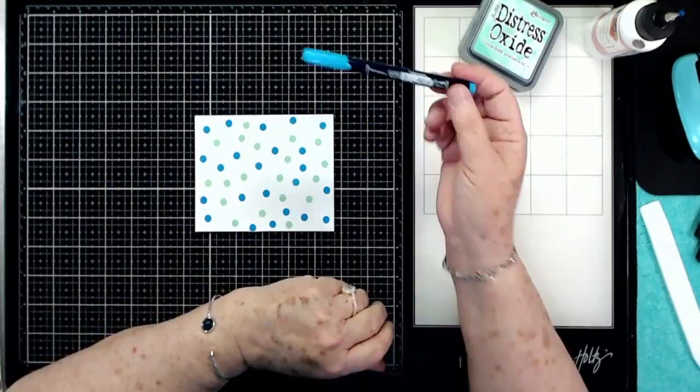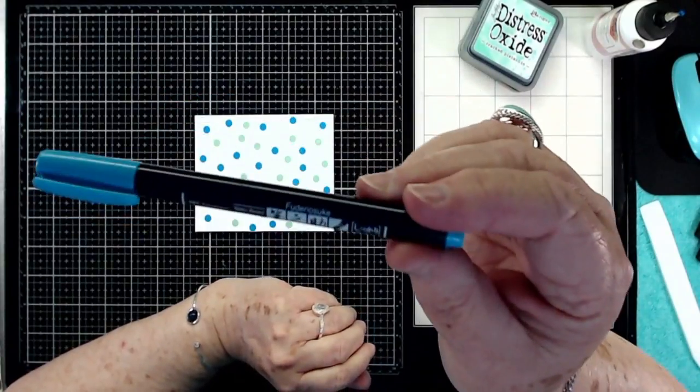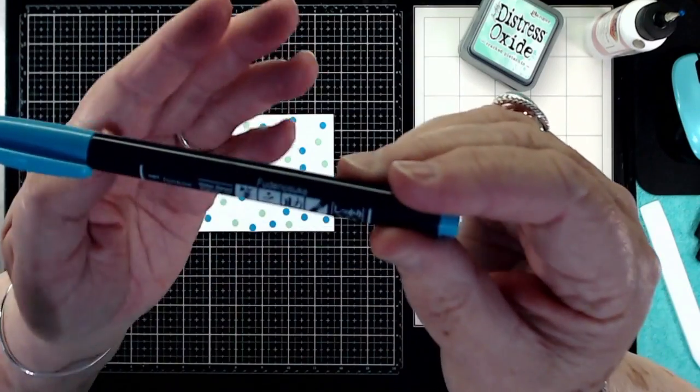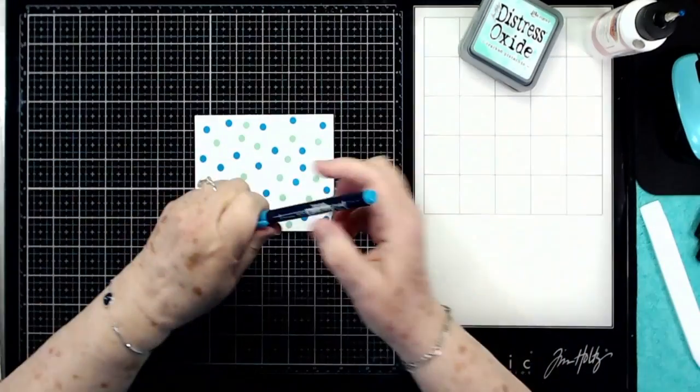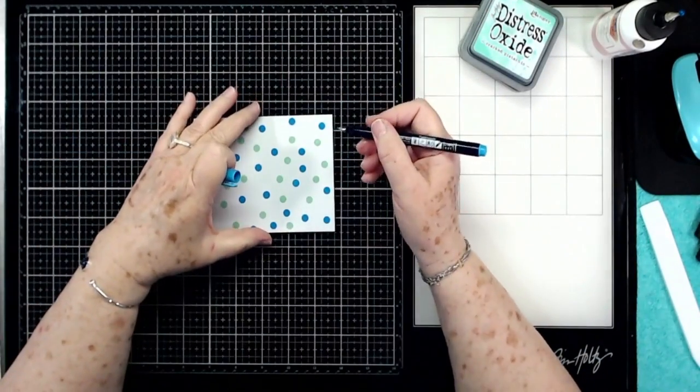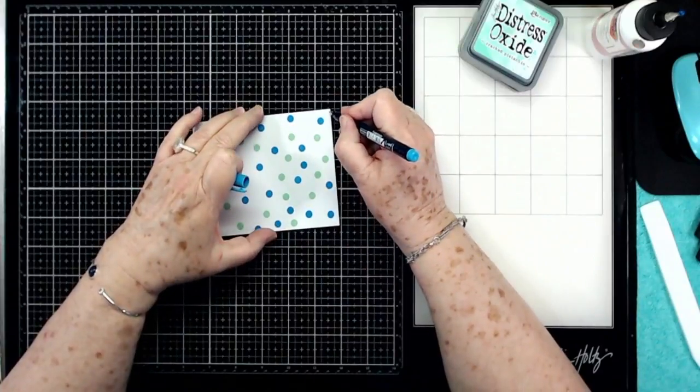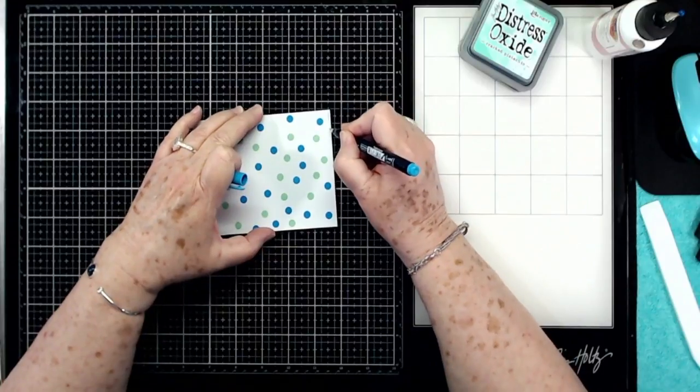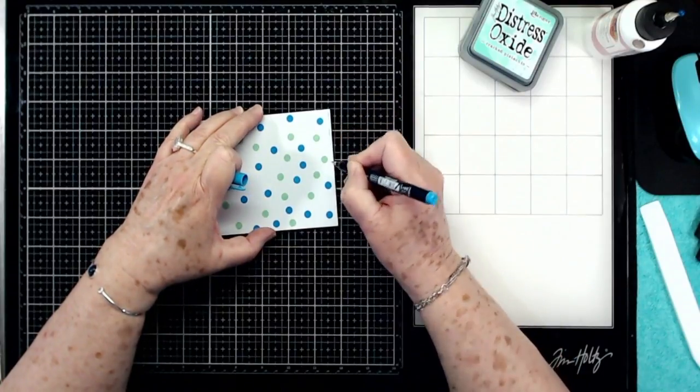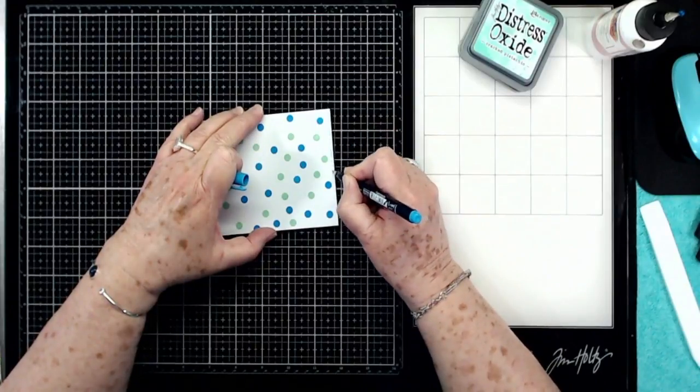I'm going to grab my little Tombow pigment ink pen. I can't pronounce the name. But anyway, we're going to grab that. It's got a little hard brush tip on it, and we're going to go around the edges and I'm just going to do some long stripes and then a couple of little dashes - long, couple of dashes, long.